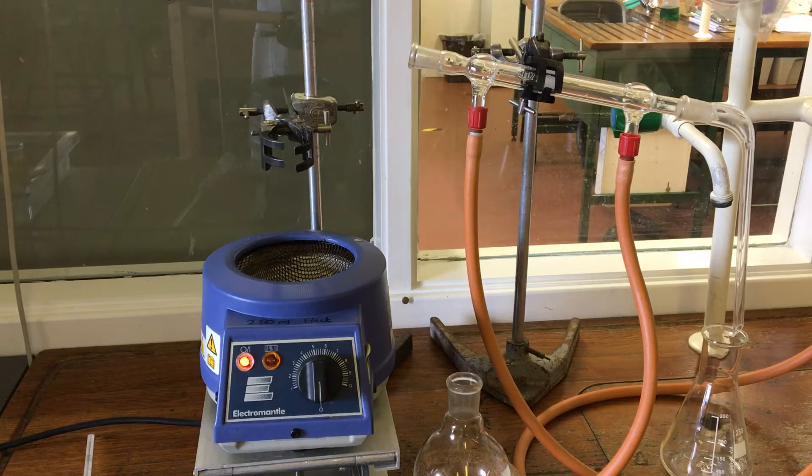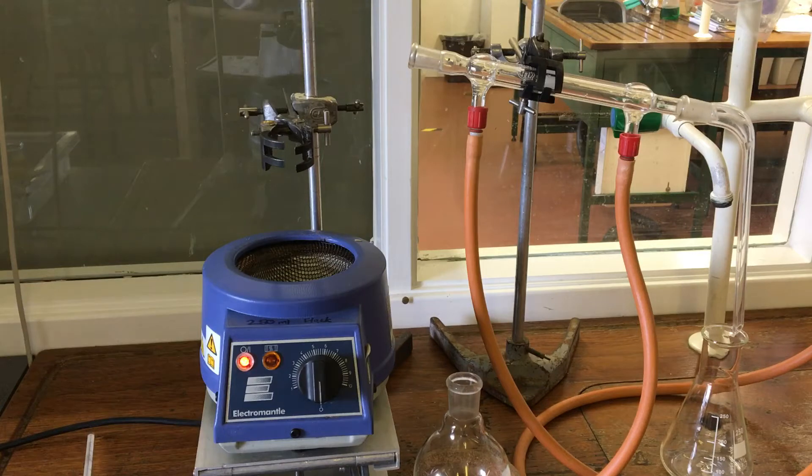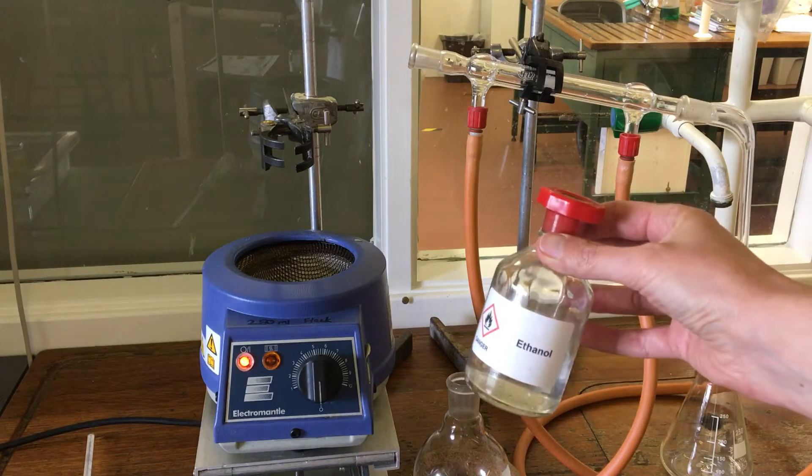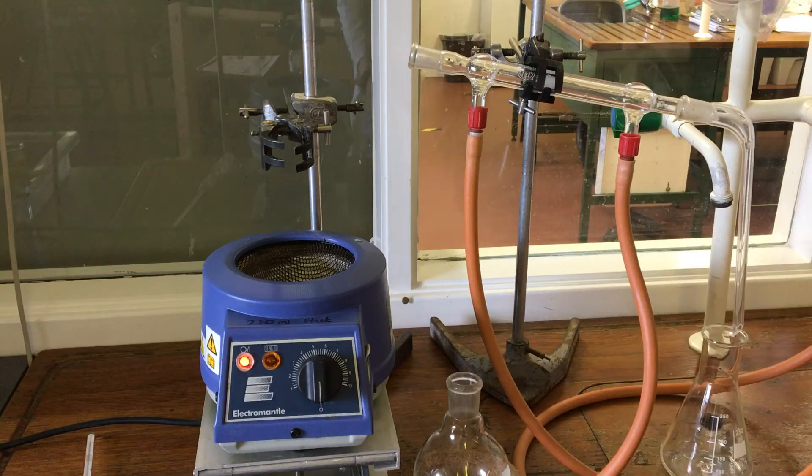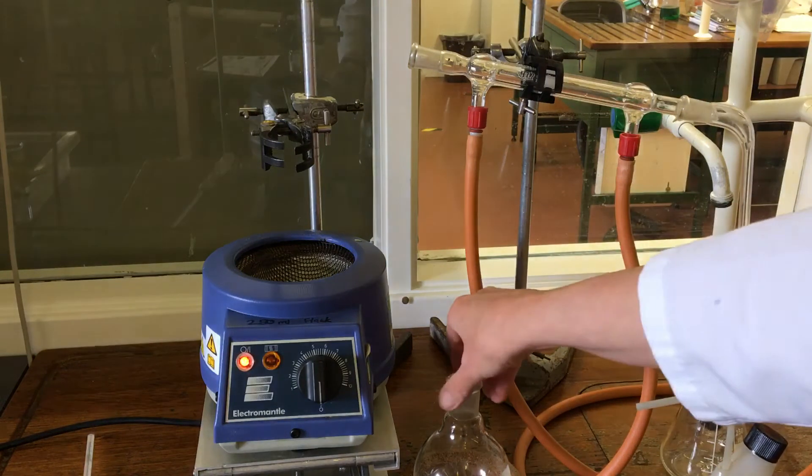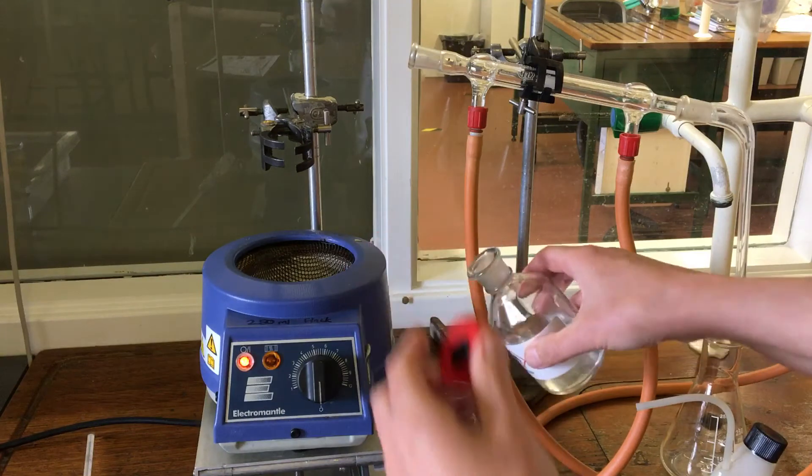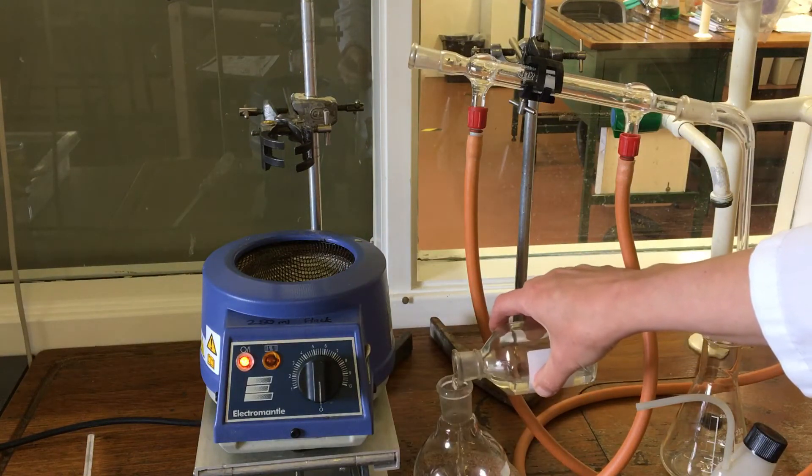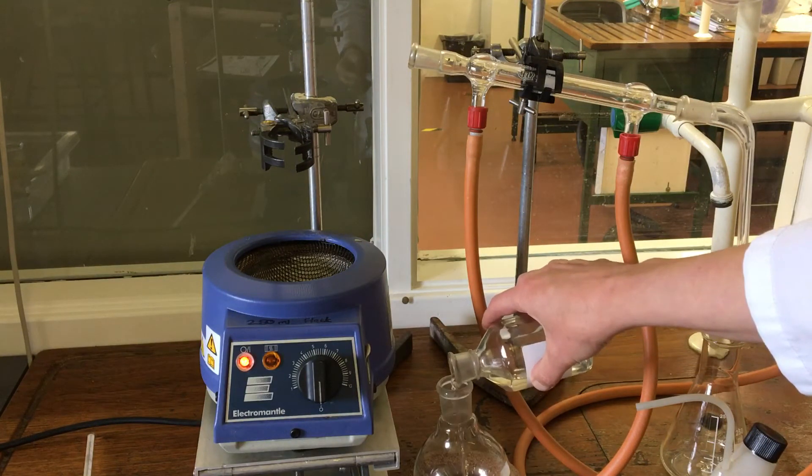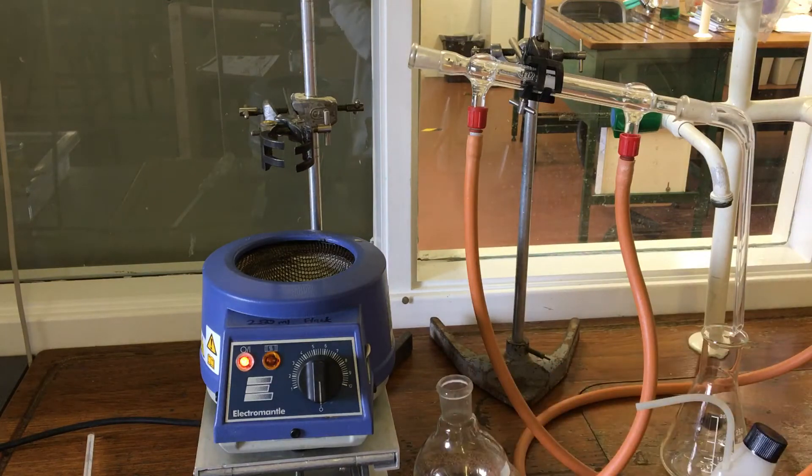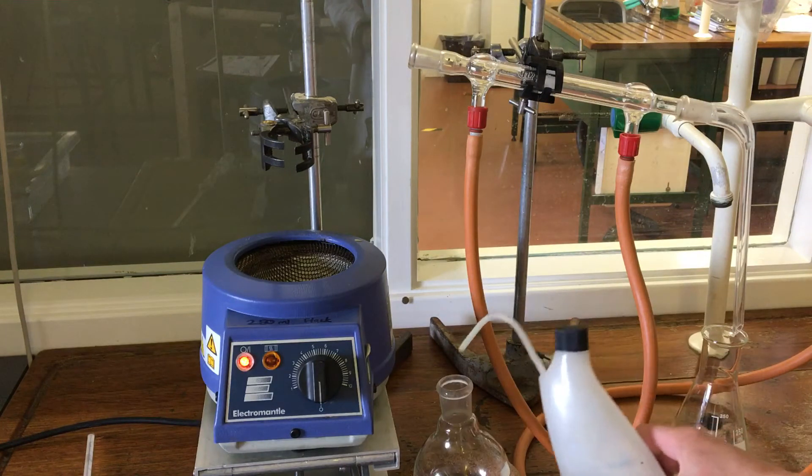I'm going to demonstrate this by separating a mixture of two liquids. Two liquids that mix together are ethanol and water. So in our flask, I'm going to make a mixture of ethanol and water.